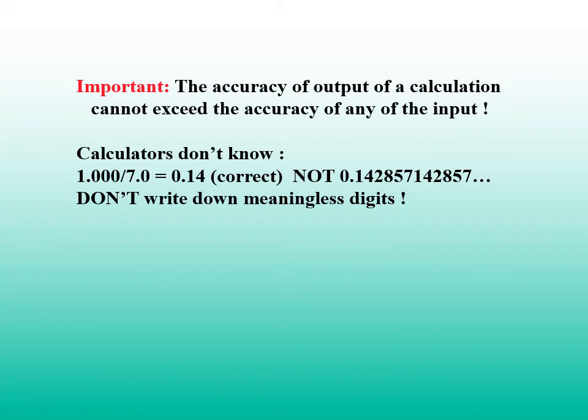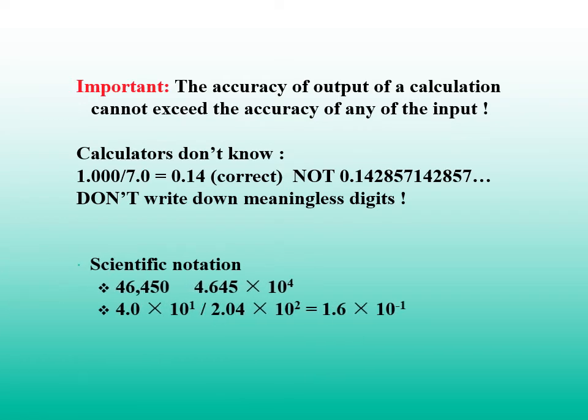Please note, the accuracy of output of a calculation cannot exceed the accuracy of any of the inputs. As you use a calculator, you input 1.000 divided by 7.0. It turns out 0.142857142857. But the correct answer is 0.14. Don't quote the meaningless digits.